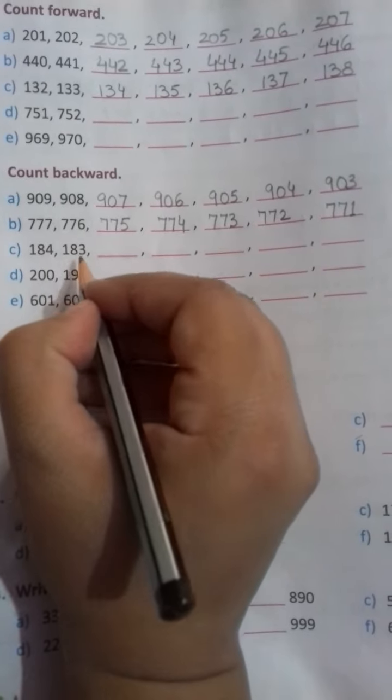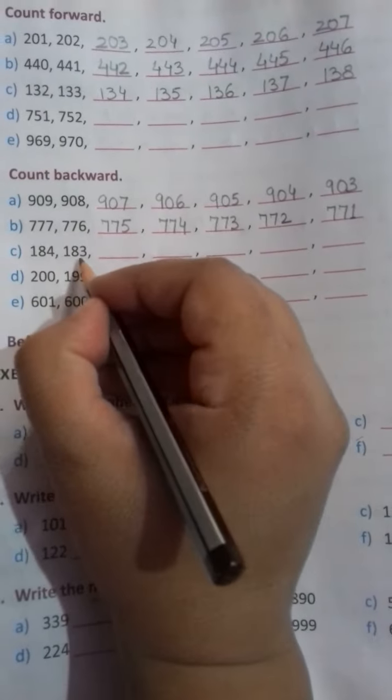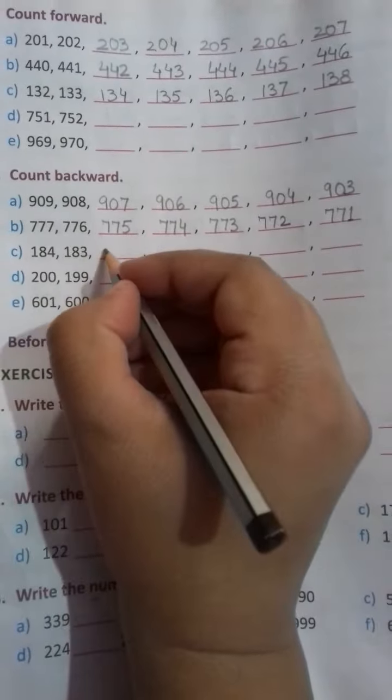Question number 2. Count backward. Children, this time we have to count backward. Backward means we have to count down, or we can say we have to write the numbers in the reverse order. Now, let's see.